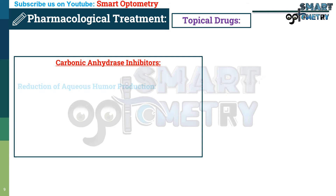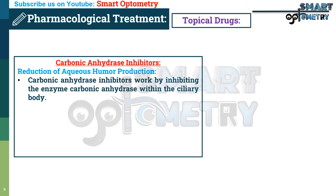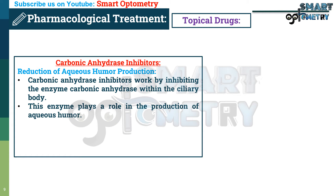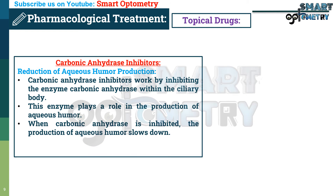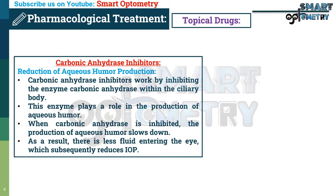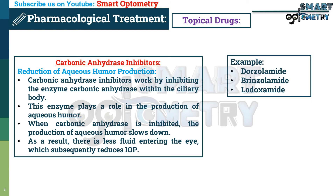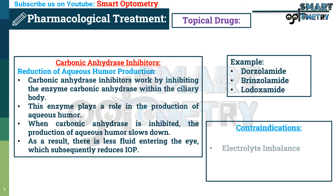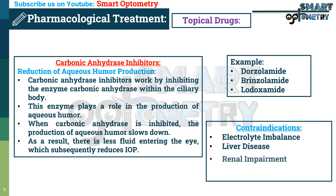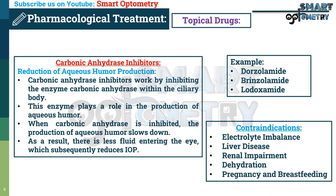Carbonic anhydrase inhibitors help in reduction of aqueous humor production. They work by inhibiting the enzyme carbonic anhydrase within the ciliary body. This enzyme plays a role in the production of aqueous humor. When carbonic anhydrase is inhibited, the production of aqueous humor slows down, resulting in less fluid entering the eye and subsequently reducing IOP. These are examples of carbonic anhydrase inhibitors. Contraindications include electrolyte imbalance, liver disease, renal impairment, dehydration, pregnancy, and breastfeeding.